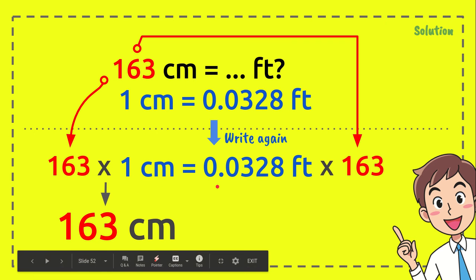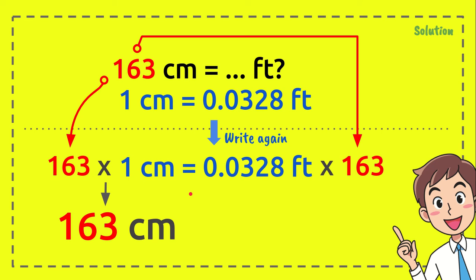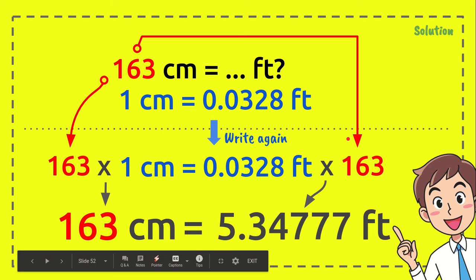return 163 centimeters. And now, 0.0328 feet times 163 equals 5.34777 feet. And that's the answer for your question.